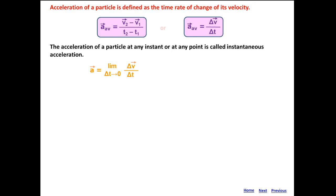While average acceleration is ΔV by ΔT, instantaneous acceleration is dV/dT. Since velocity is dS/dT, we can write acceleration as d(dS/dT)/dT, which is d²S/dT². Remember, this is not simple algebra — it is the second order derivative. So, second order derivative of displacement gives acceleration, first order derivative of displacement gives velocity, and first order derivative of velocity gives acceleration.